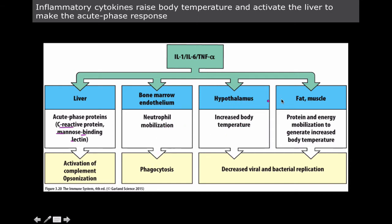On both the hypothalamus, the fat, and the muscles, we have increased metabolism, which leads to increased body temperature, which can actually cause a fever, which leads to decreased viral and bacterial replication. Most pathogenic microorganisms and viruses have a specific temperature that they prefer to grow at — an optimal growth temperature — and usually when you raise the internal temperature of your body, that's going to make it an inhospitable environment for them.